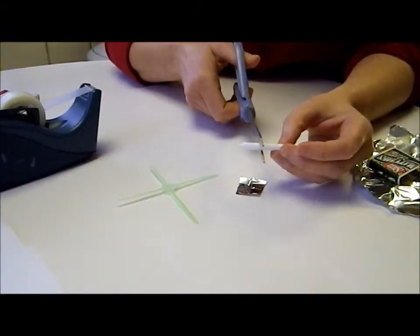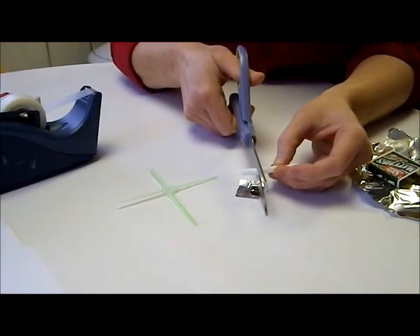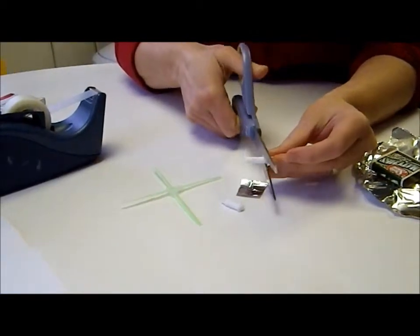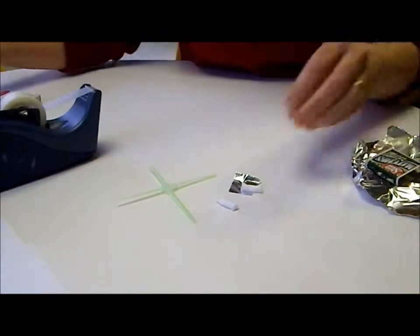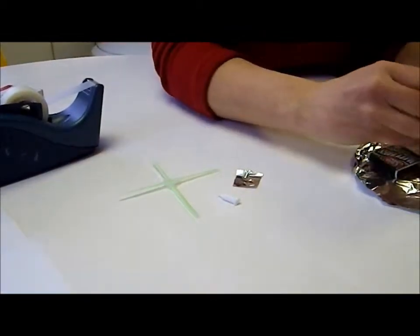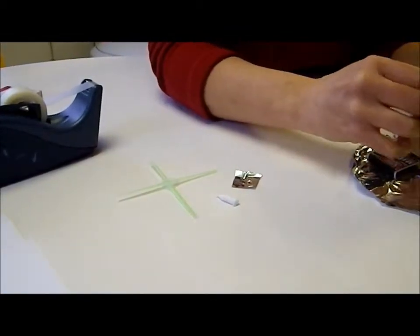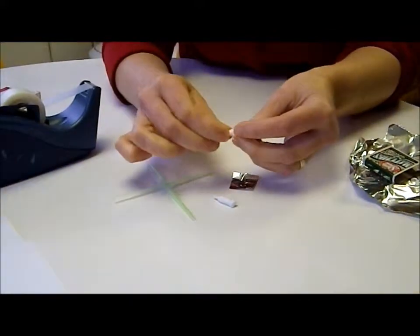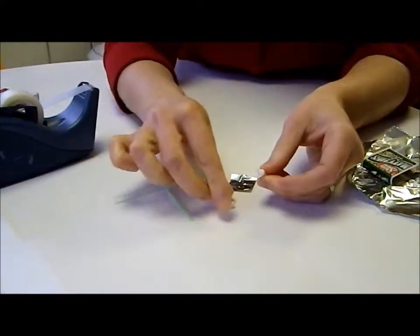You're going to take the candle and you only need about a third. So I'm going to cut the first third and the second third. And then I'm going to remove some wax from one of them so that I have a little wick showing for both.